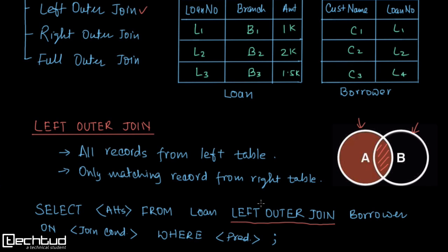This is left outer join. Similarly, in right outer join it's very simple — instead of writing LEFT OUTER JOIN we will write RIGHT OUTER JOIN.